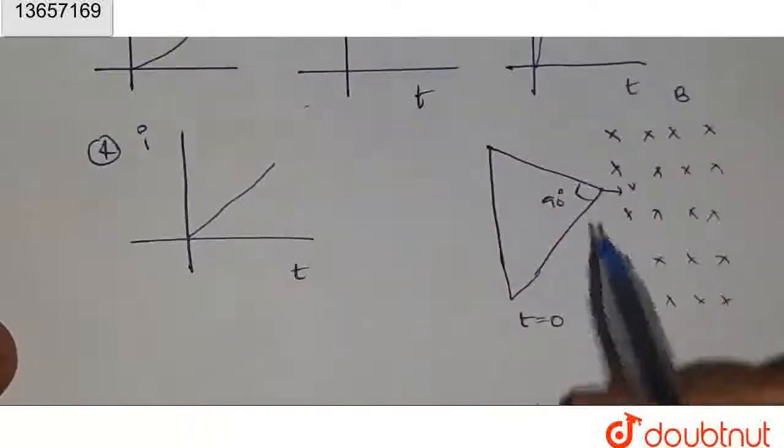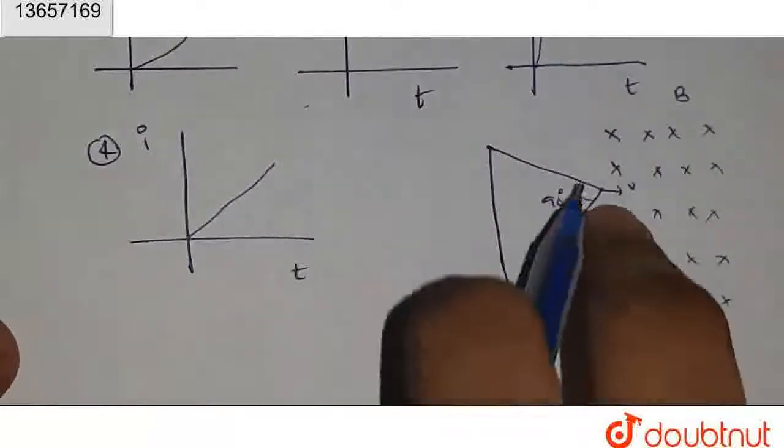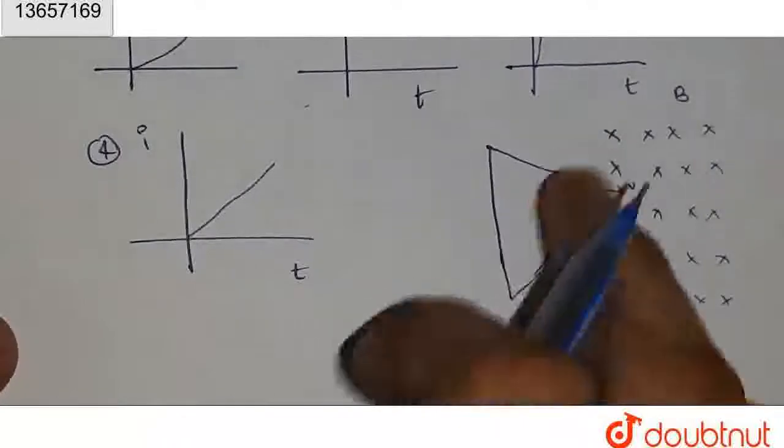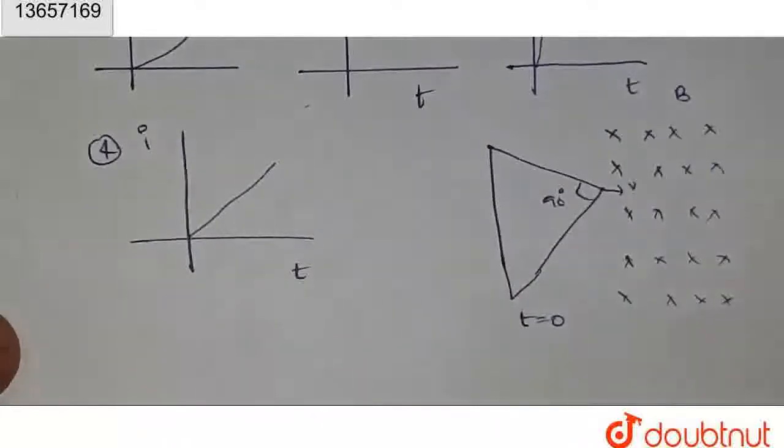In our diagram, apex angle in degrees, t equals 0, this is the position. This is v. Now guys, we have force.